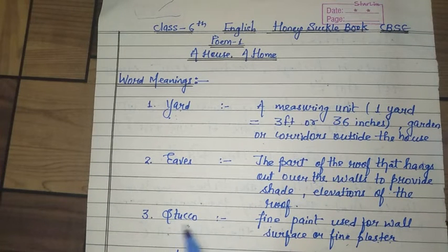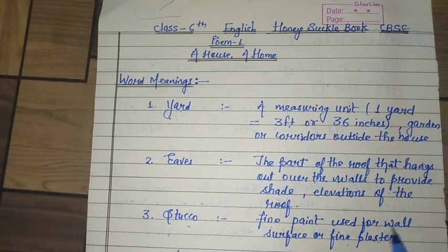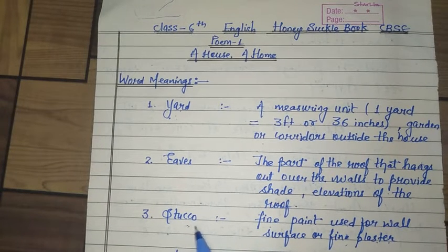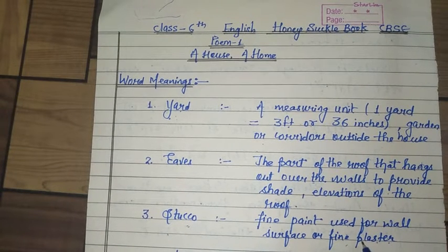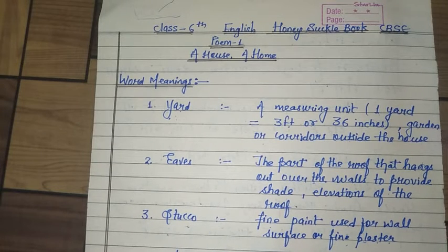Stucco — fine plaster used for wall surface, or fine plaster. Stucco matlab fine plaster, jo divaron par, walls par, ya roof par, usko plane karne ke liye kiya jata hai.